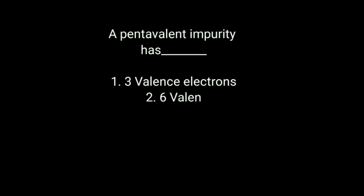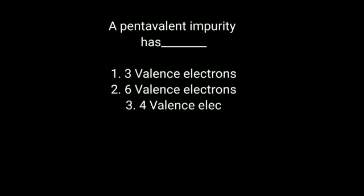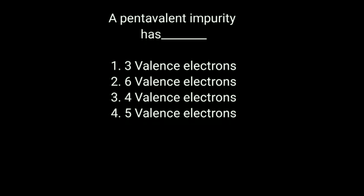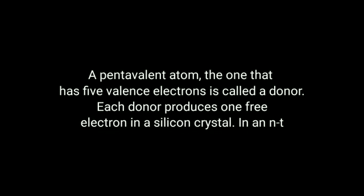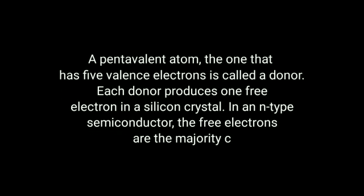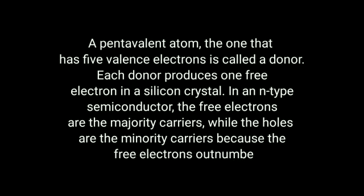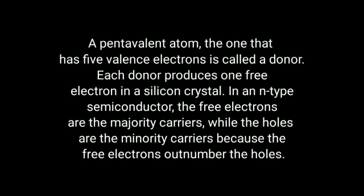Next question: A pentavalent impurity has blank — Option 1: 3 valence electrons. Option 2: 6 valence electrons. Option 3: 4 valence electrons. Option 4: 5 valence electrons. Answer: A pentavalent impurity has 5 valence electrons. A pentavalent atom is called a donor; each donor produces 1 free electron in a silicon crystal. In an N-type semiconductor, free electrons are the majority carriers, while holes are minority carriers because free electrons outnumber the holes.